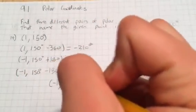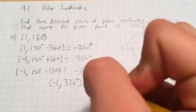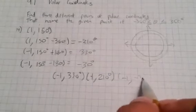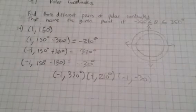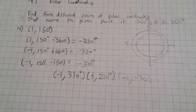So the polar coordinates are negative 1, 330 degrees, 1, 210 degrees, and negative 1, negative 30 degrees.